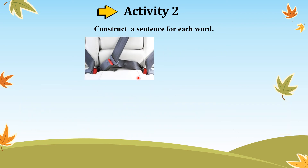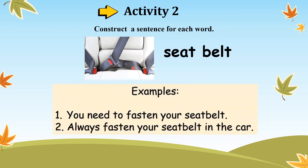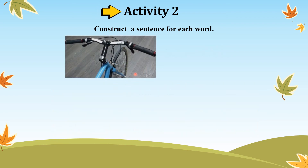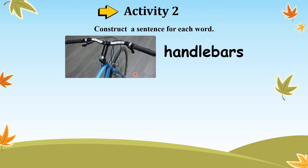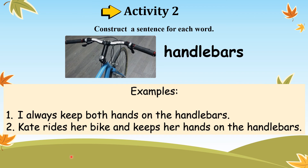Let's proceed to this thing. What do we call this? Seatbelt. Let's look at the examples: 'You need to fasten your seatbelt.' 'Always fasten your seatbelt in the car.' And what is the answer for this one? Handlebars. Let's look at the example sentences: 'I always keep both hands on the handlebars.' 'Kate rides her bike and keeps her hands on the handlebars.'